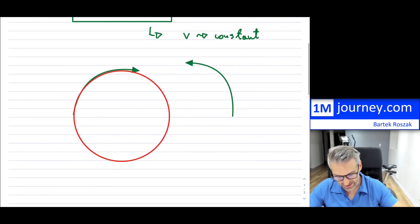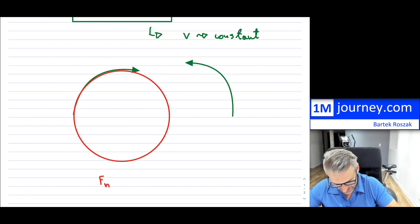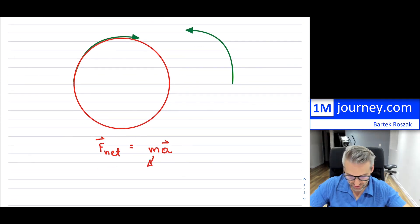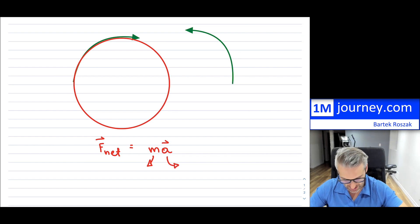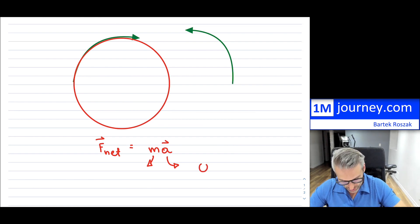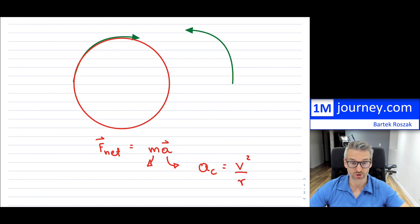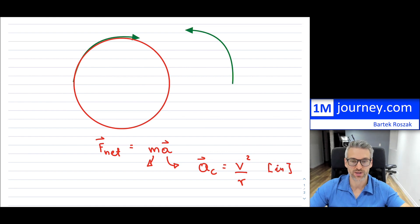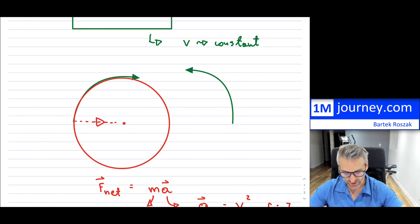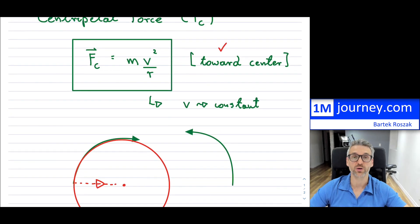Recall that Newton's second law tells us something interesting: the net force equals mass times acceleration. The mass is always the mass of the object. Here, the acceleration is the centripetal acceleration, which turns out to be V squared over R. It has a direction — towards the center, or inwards, toward the actual center of that circle.